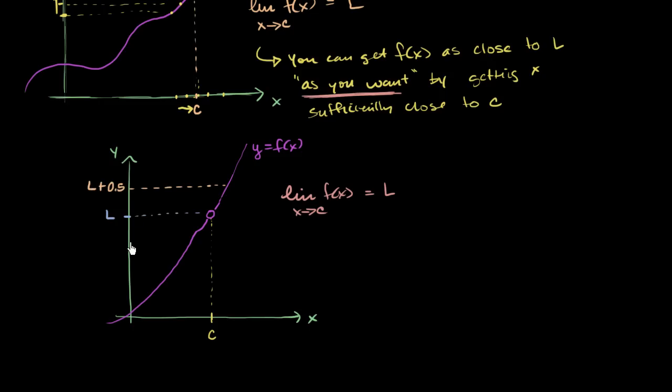And this right over here is L minus 0.5. And then you say, fine. I'm going to give you a range around c that if you take any x within that range, your f of x is always going to fall in this range that you care about. And so you look at this, and obviously we haven't explicitly defined this function, but you can even eyeball it the way this function is defined.